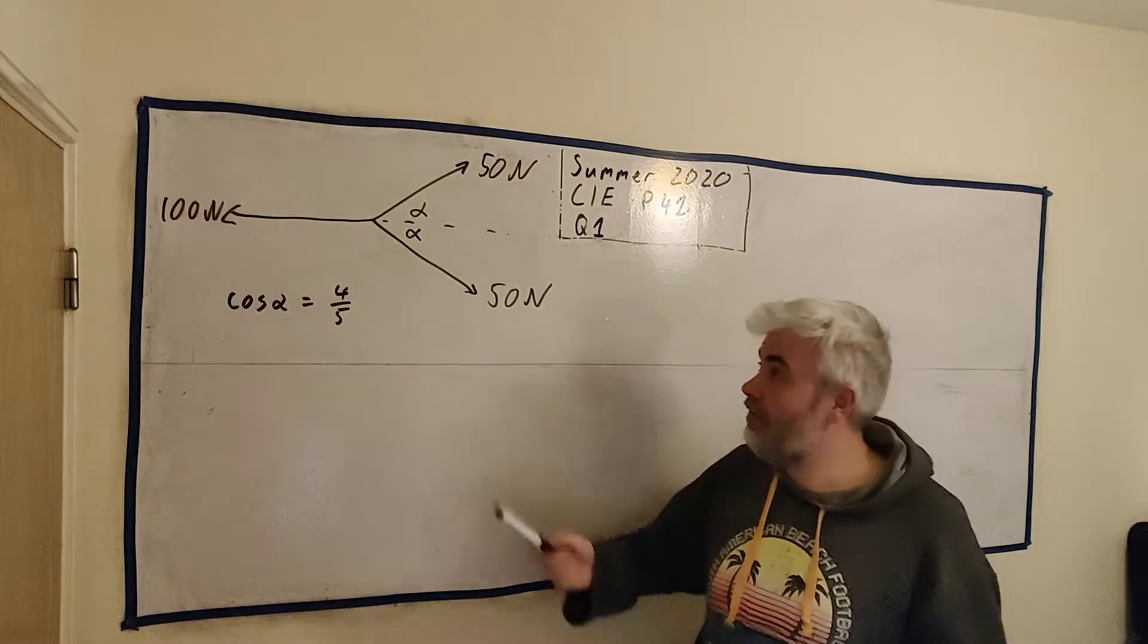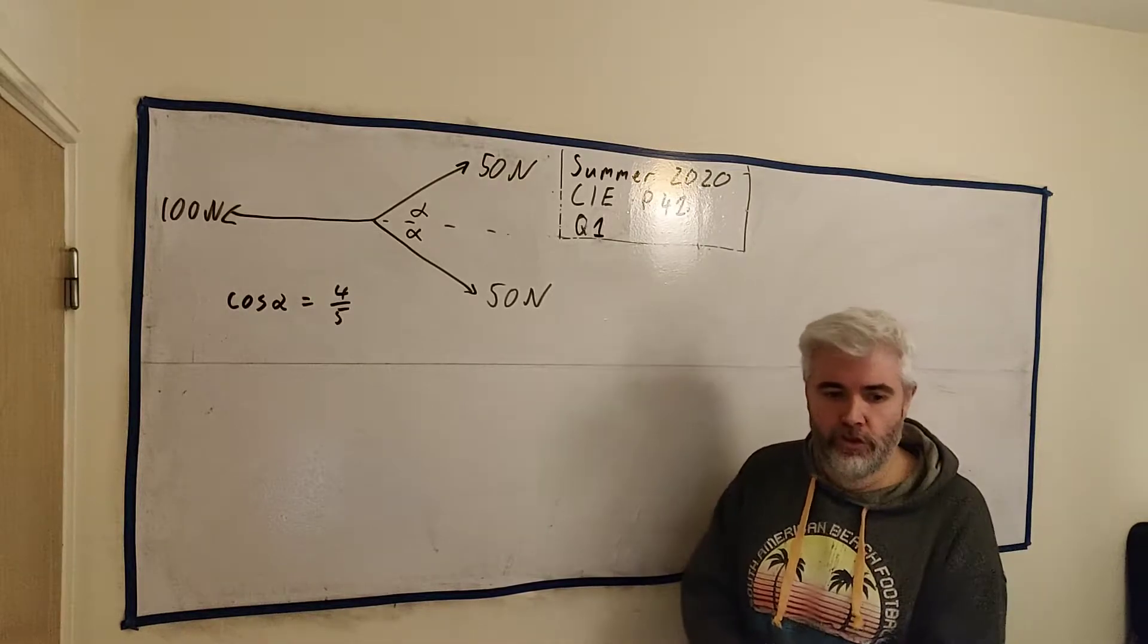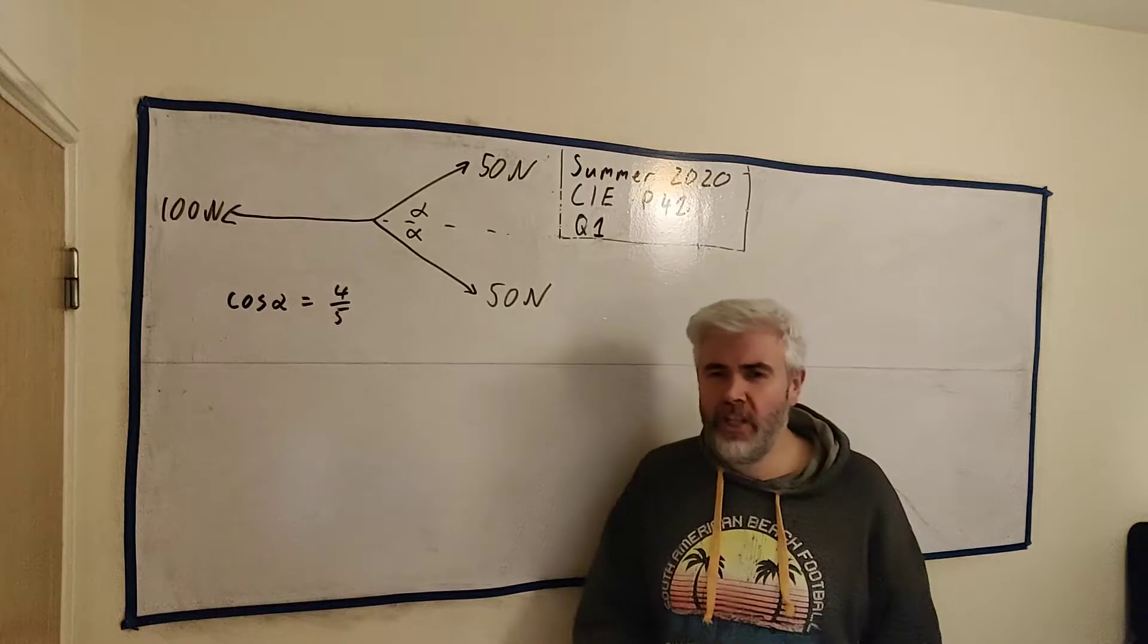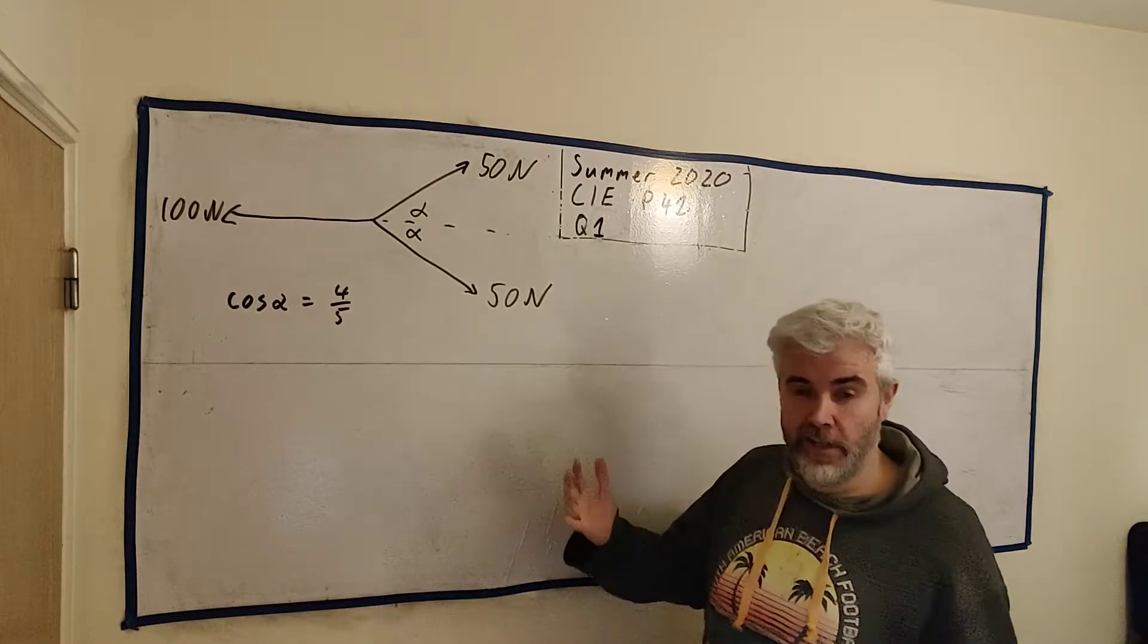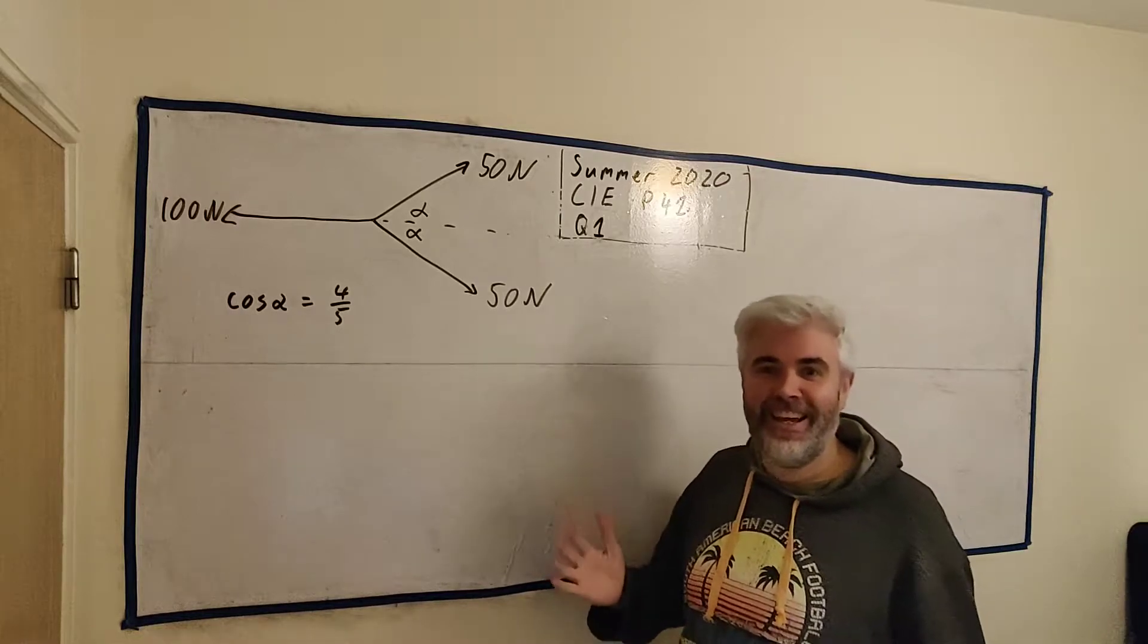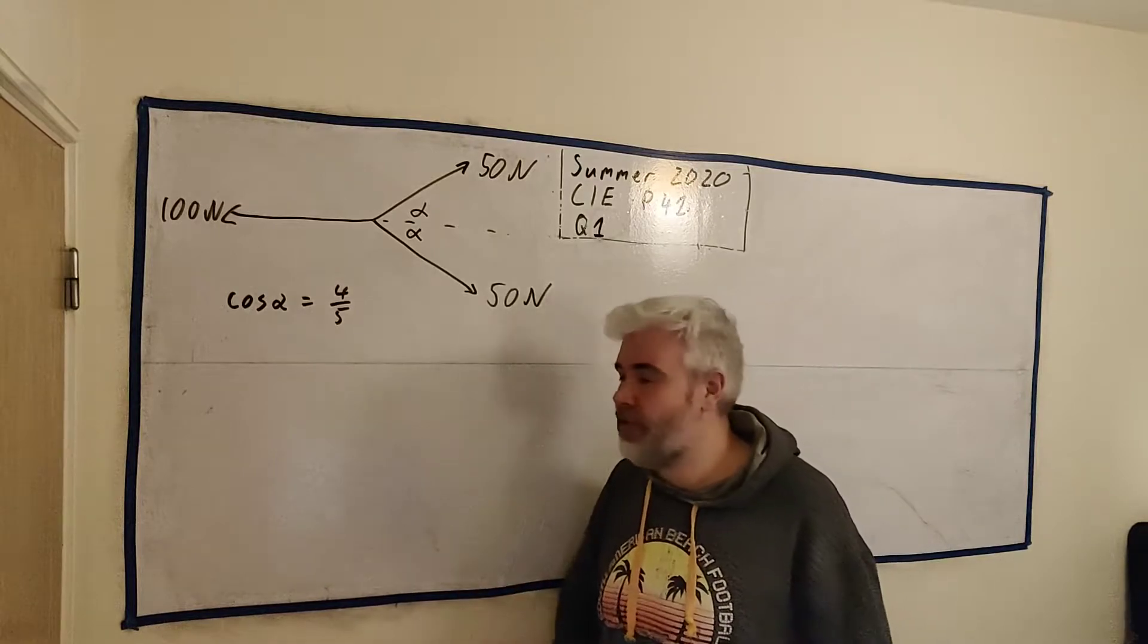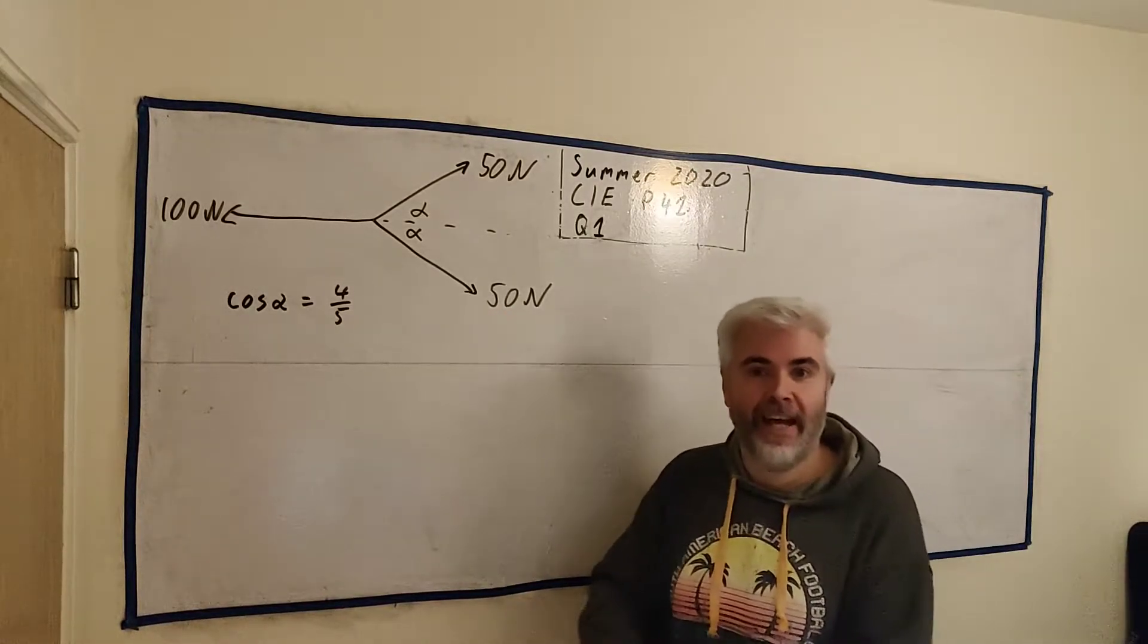In this question they give us three vectors here to represent three forces and they ask us to find the magnitude of the resultant force and what direction it's in. We can do this by breaking up each of these forces into forces that go up and down in the vertical direction and left and right in the horizontal direction. And then we just simply add them together.